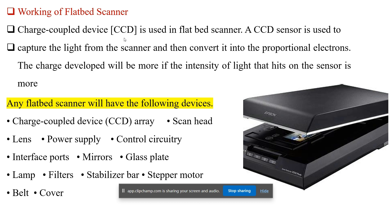Now let's see the working of a flatbed scanner. A CCD sensor is used in a flatbed scanner to capture the light from the scanner and then convert it into proportional electrons. The charge developed will be more if the intensity of the light hitting the sensor is more.